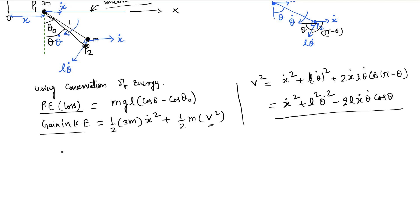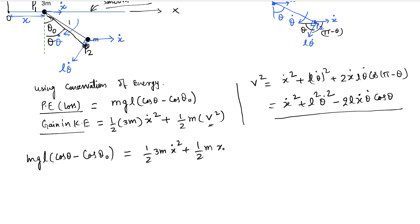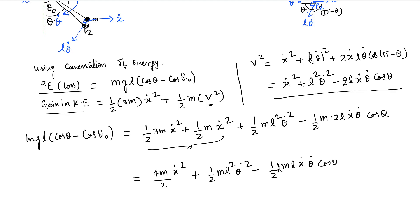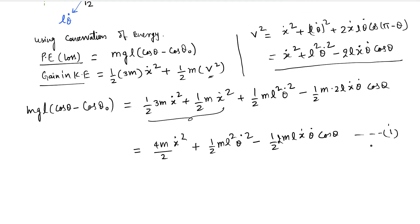Using conservation of energy, the potential loss equals the gain in kinetic energy: mgl(cos theta minus cos theta zero) equals one half times 3m times x dot squared plus one half times m times (l squared theta dot squared minus 2l x dot theta dot cos theta). Combining the x dot squared terms gives 4m x dot squared by 2, plus one half m l squared theta dot squared, minus one half m times 2l x dot theta dot cos theta. Let's call this equation one.